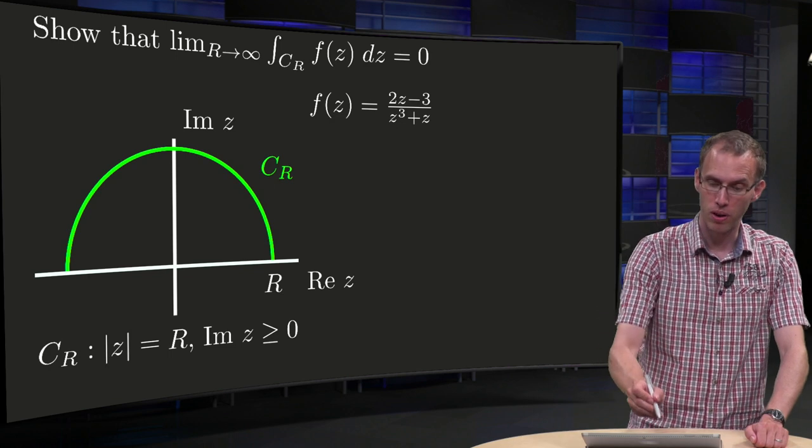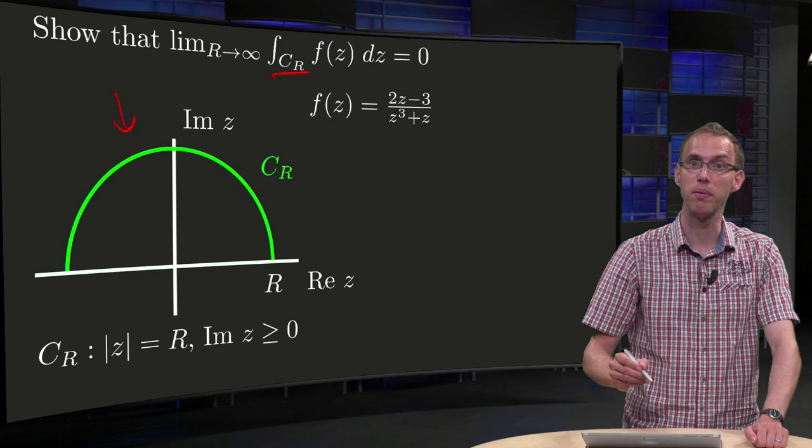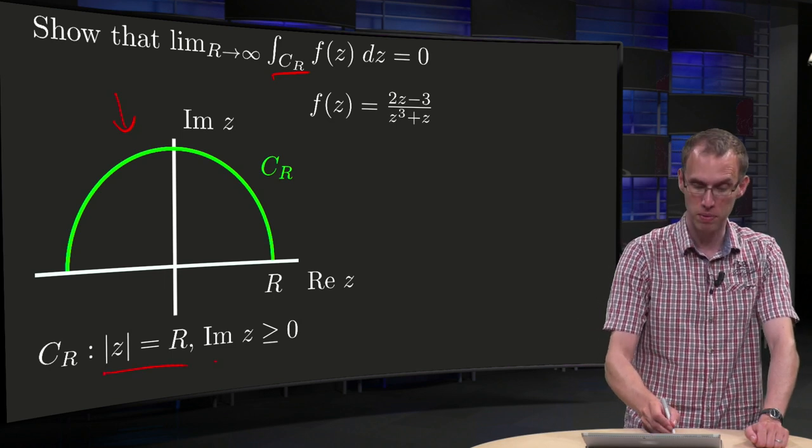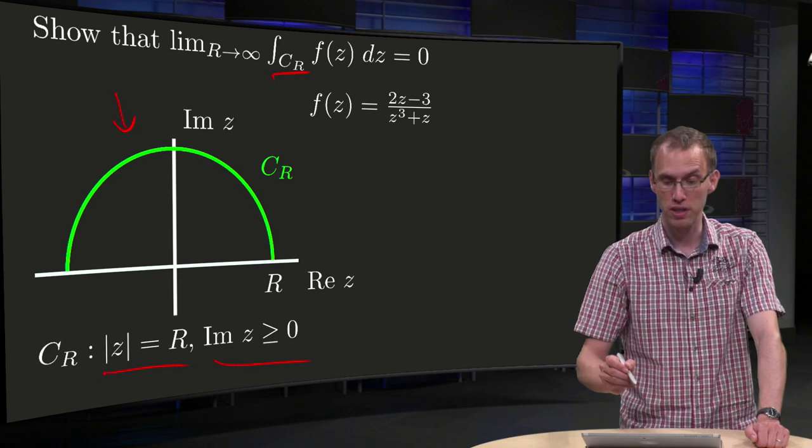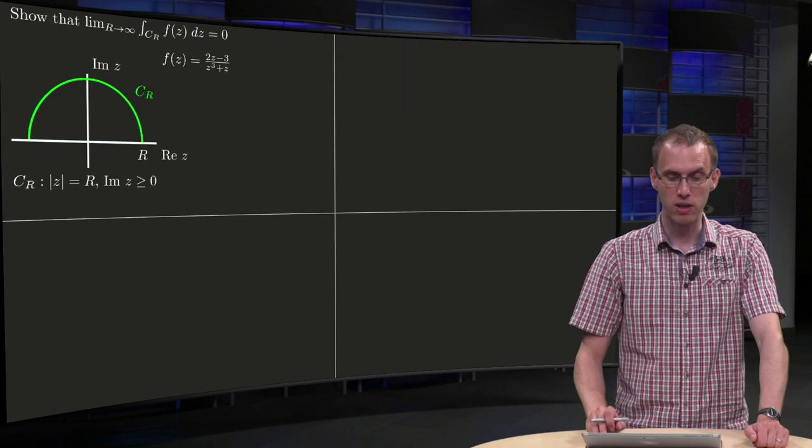So we have an integral along CR, where our CR is given over here by the green curve, a norm of z constant and the imaginary part of z positive with this f of z over here. So how do we do it?